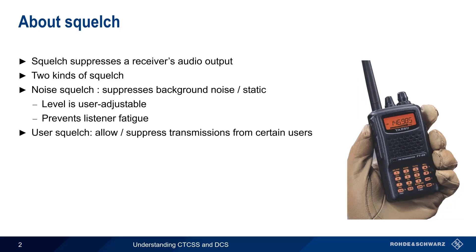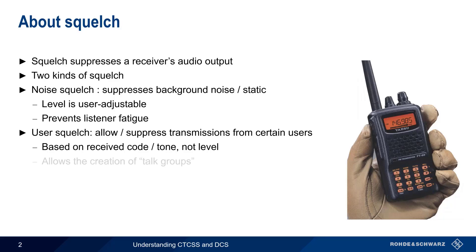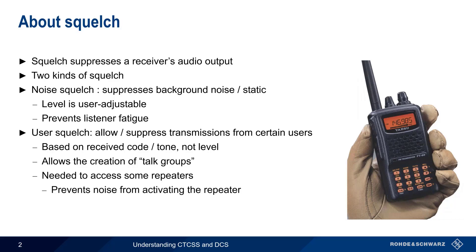The other type of squelch is user squelch, which either allows or suppresses transmissions from certain users. Unlike noise squelch, user squelch is not based on the received level, but rather on some type of code or tone embedded in the transmitted audio. Regardless of the received RF level, there is no audio output unless the correct code or tone is received. There are two main applications of user squelch. One is the creation of talk groups, where transmissions from users outside of that group are suppressed. The other main application is access to repeaters, where the repeater will not retransmit a signal unless it contains the proper tone or code. This prevents the repeater from being inadvertently activated by noise, spurious transmissions, etc.